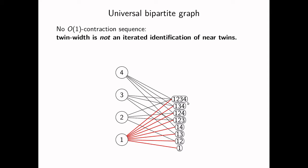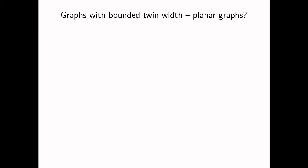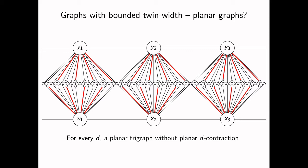Yet you have a contraction sequence where you just identify or contract near twins. You can find those pairs that are differing only on neighbor one. With our definition of twin-width, it would not give a good contraction sequence because vertex 1 would have large red degree. Going back to positive cases, we saw that grids have bounded twin-width. What about planar graphs in general? And here we stumble over the first obstacle.